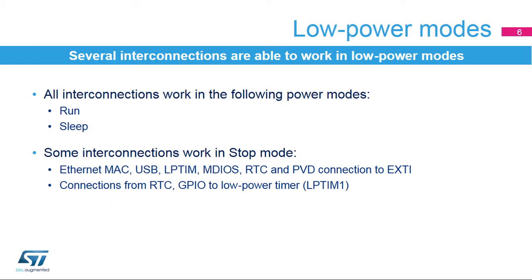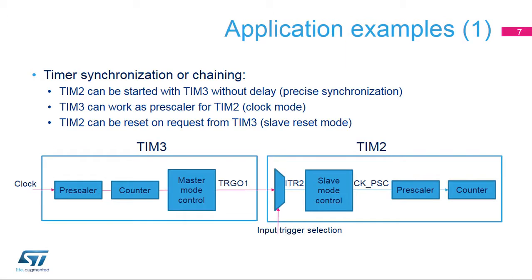Peripherals can be interconnected using the Interconnect Matrix even when the circuit is in a low power mode. The fully supported power modes are run and sleep. Connections from the real-time clock or GPIO to low power timers can also be used in stop modes, as well as Ethernet MAC, USB, low power timers, management data input-output or MDIO slaves, real-time clocks, and the programmable voltage detector or PVD connection to the external interrupt event controller.